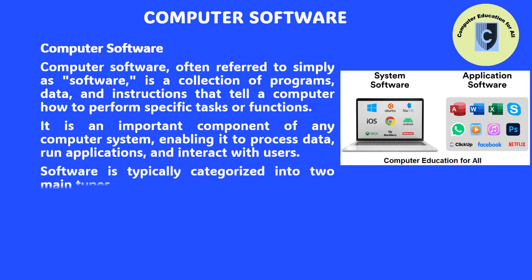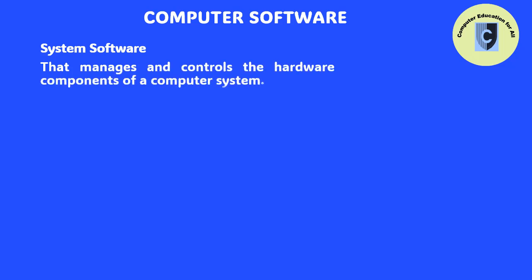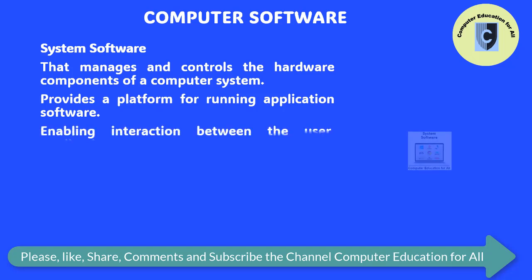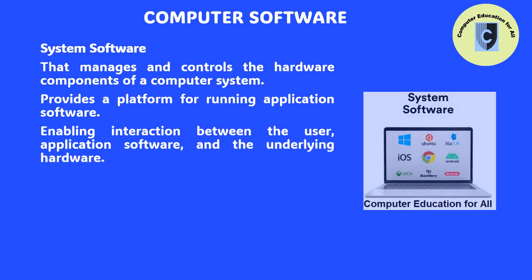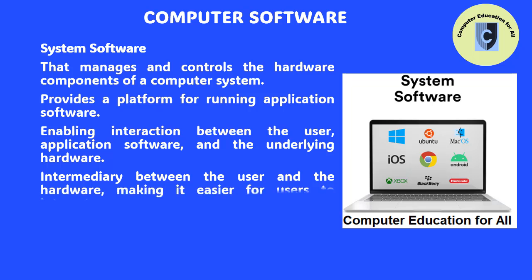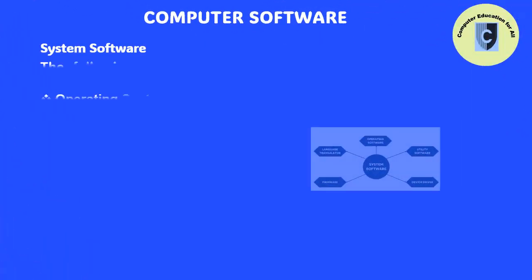Software is typically categorized into two main types: system software and application software. System software refers to a type of computer program that manages and controls the hardware components of a computer system, as well as provides a platform for running application software. It plays a crucial role in enabling interaction between the user, application software, and the underlying hardware. System software serves as an intermediary between the user and the hardware, making it easier for users to interact with and utilize computer systems effectively.